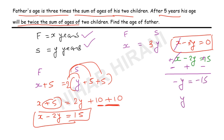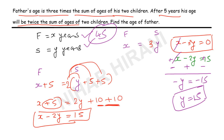The negatives cancel, so y = 15. This means the sum of the ages of the two children is 15 years. Since the father is three times that, the father's age is 45 years. This is very simple. I hope you find it useful — don't forget to press the like button. Thanks for watching.